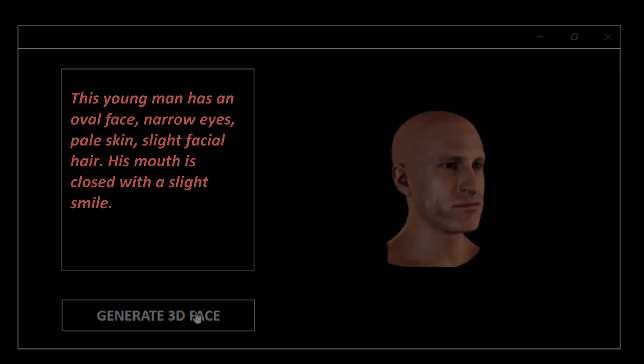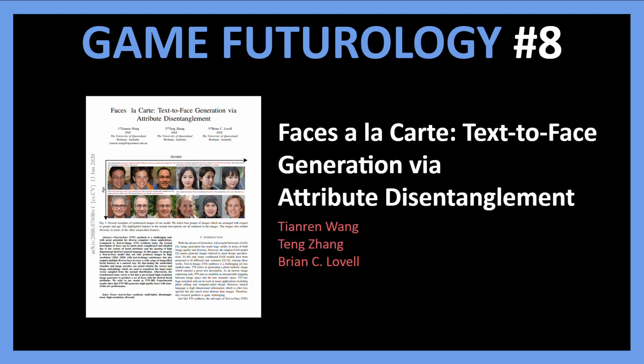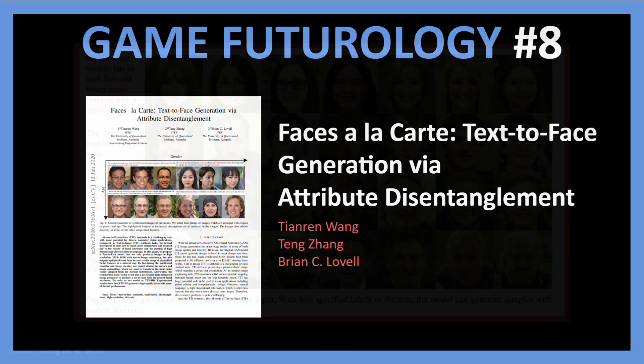I realized this would be possible when I came across two different CVPR papers, and I thought combining the two would make it possible to create such a tool that converts text to 3D faces. The first paper, titled 'Text to Face Generation via Attribute Disentanglement,' introduces the TTF-HD Framework for producing high resolution 1024x1024 images from a text description containing the facial attributes of an imaginary person.